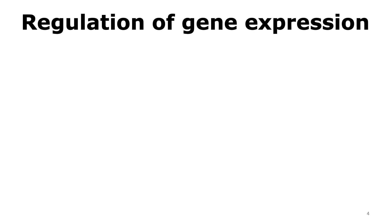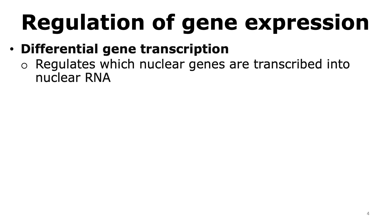This brings us to the concept of regulation of gene expression, which basically means there have to be ways to determine what genes are expressed and which ones are not. The way regulation of gene expression can occur is through differential gene transcription. This process regulates which of the nuclear genes are going to be transcribed into nuclear RNA.